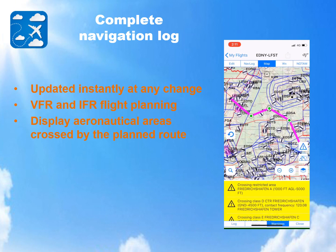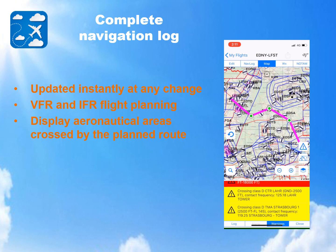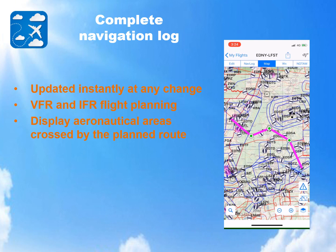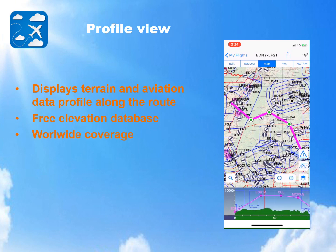You could click on the Warning tab to view, for each route segment, the crossed aeronautical areas. The Profile View button will display the terrain profile and aviation areas along the route. These displays make use of elevation data on the route. When you open a planned flight, AirMet will propose to download the elevation data in the area if not already stored.